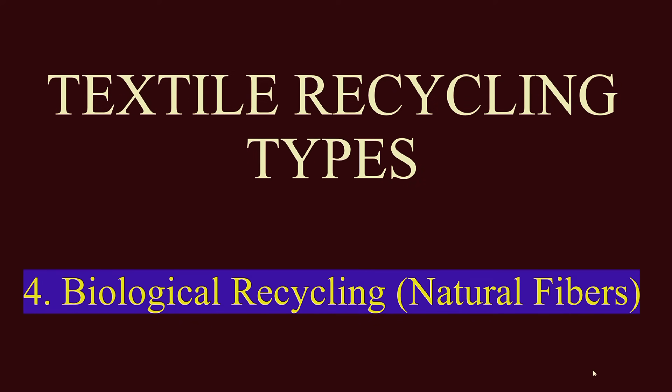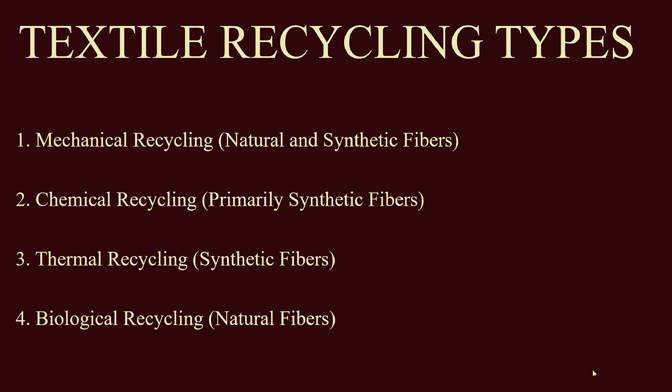In previous lectures we discussed different types of textile materials recycling — mechanical recycling, its advantages and disadvantages, chemical recycling of textile materials, and thermal recycling. There are four types: mechanical recycling for natural and synthetic fibers, chemical recycling for synthetic fibers, thermal recycling for synthetic fibers, and biological recycling for natural fibers.